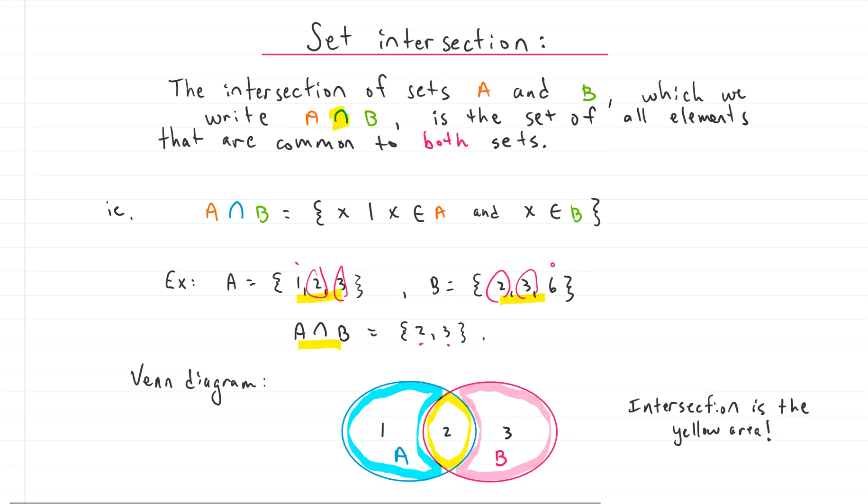If we wanted to write it in set builder notation, we would say A intersect B is any value, say X, such that X is an element of A and X is an element of B, meaning X is in A and X also is in B. And if you're just wondering what this little E looking thing, that is called an epsilon. It's a Greek letter. And it means an element of, it's just kind of mathematical shorthand.